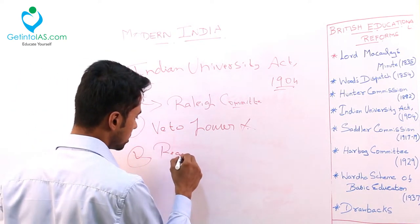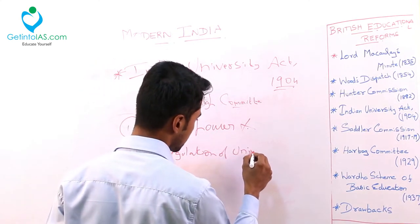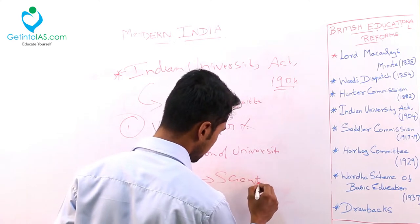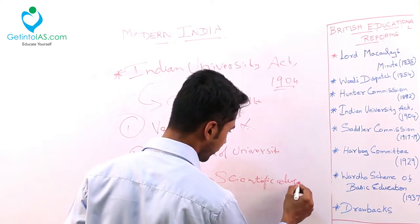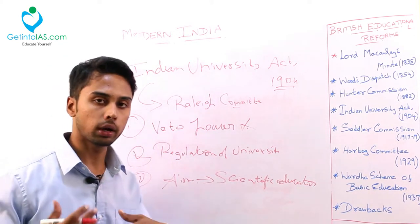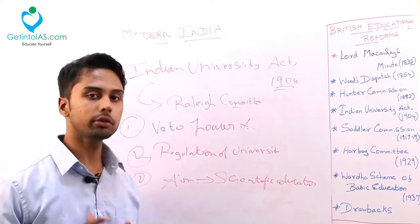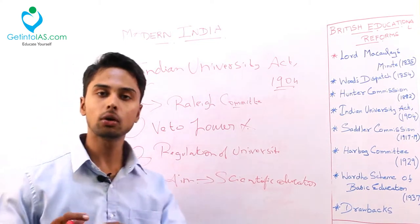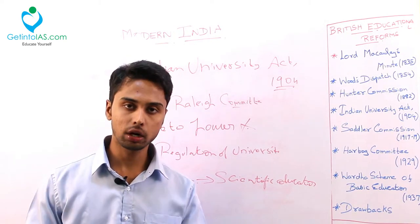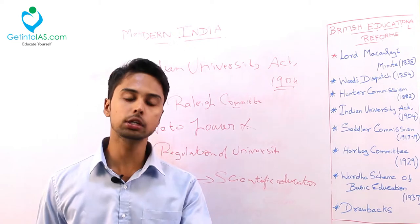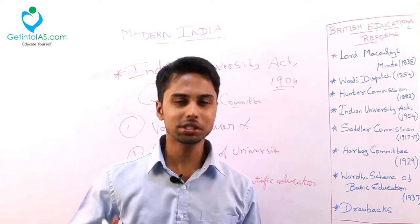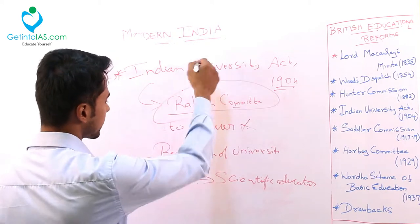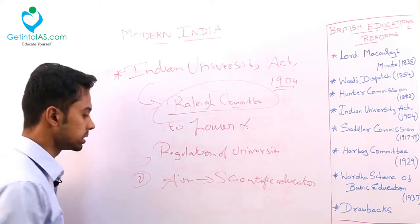The regulations of the universities were strengthened, with the aim shifted towards scientific and research education. Earlier, the aim of universities was only to impart education; by this act, the aim was redirected towards scientific reforms and education. The members in the university were reduced and regulated, and setting of syllabus and everything was under the control of the government. This provoked many Indians. The main thing noted is that by the Raleigh Committee only this University Act came, and the main aim of the act is to regulate the Indian universities.